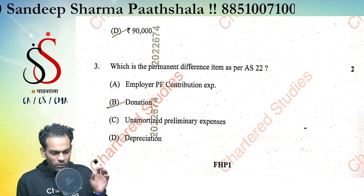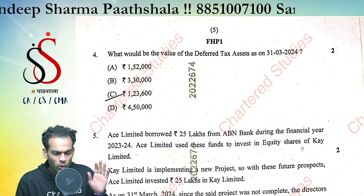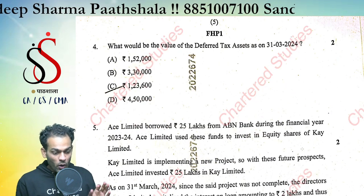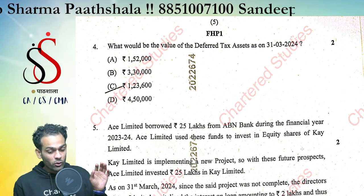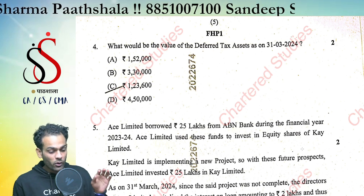What is a permanent difference as per AS 22? The answer is donation. What would be the value of the deferred tax asset as on 31st March 2024? The answer is 1,26,600.